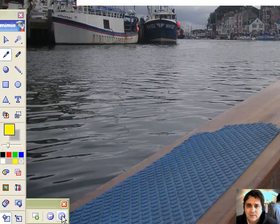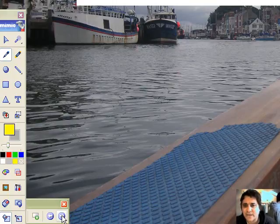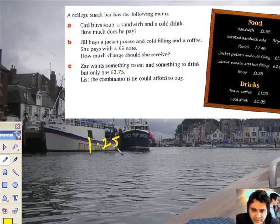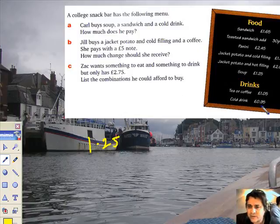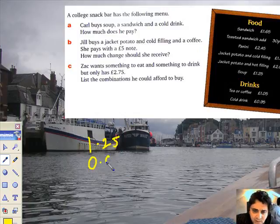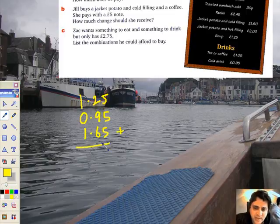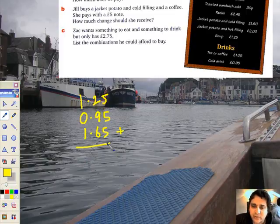Carl buys soup, sandwich and a cold drink. How much does he pay? Right, what have we got here? Soup, so he obviously likes his soup. We've got £1.25 for the soup. We have got a cold drink, that's not a good idea Carl, is it? A cold drink for goodness sake on top of soup. What else have we got? And a sandwich, he's got some sense then. It's £1.65. How much does he pay? Well, let's just see how much the boy has to pay.